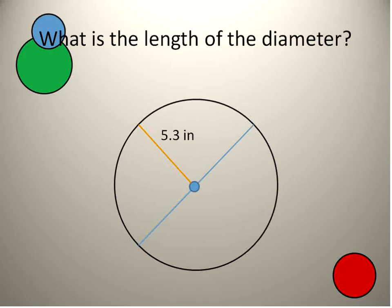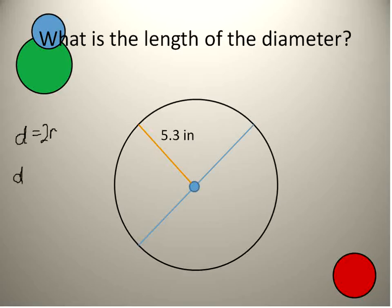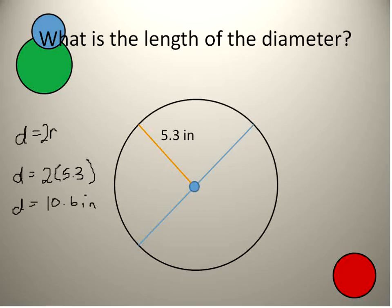We're going to use that to answer the next couple of questions. First off, what is the length of this diameter? We're given that the radius is equal to 5.3 inches. So we use our equation: the diameter is equal to two times the radius, which is two times 5.3. Our diameter is equal to 10.6 inches. We could also just label it in the diagram: 10.6 inches, showing that the diameter is equal to that distance.